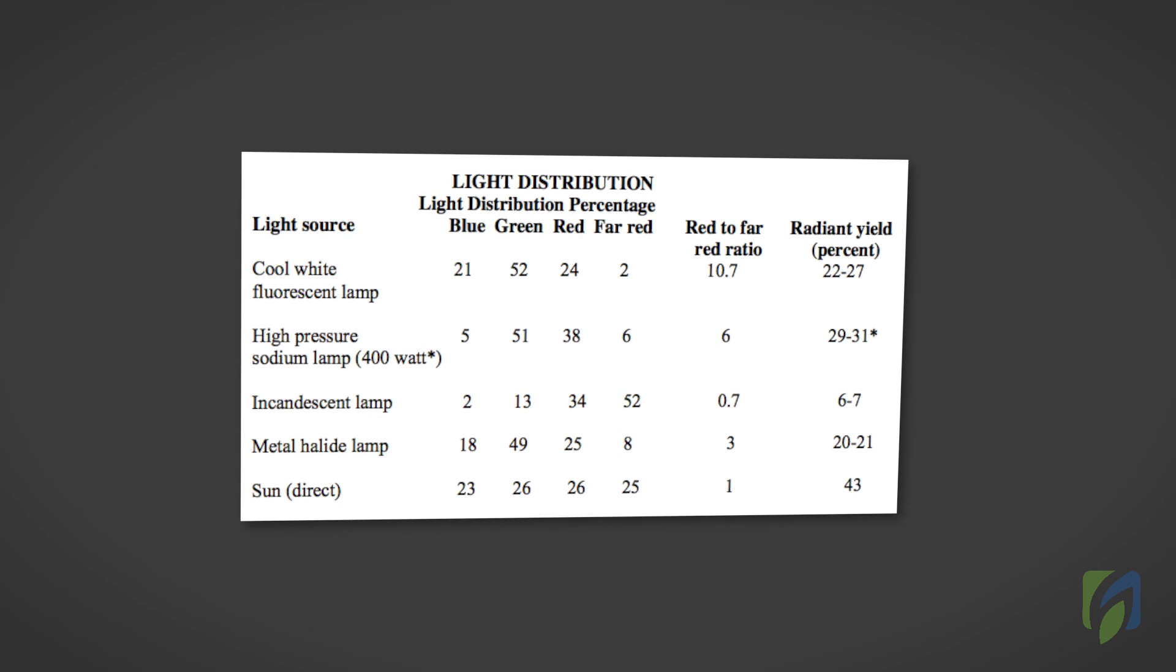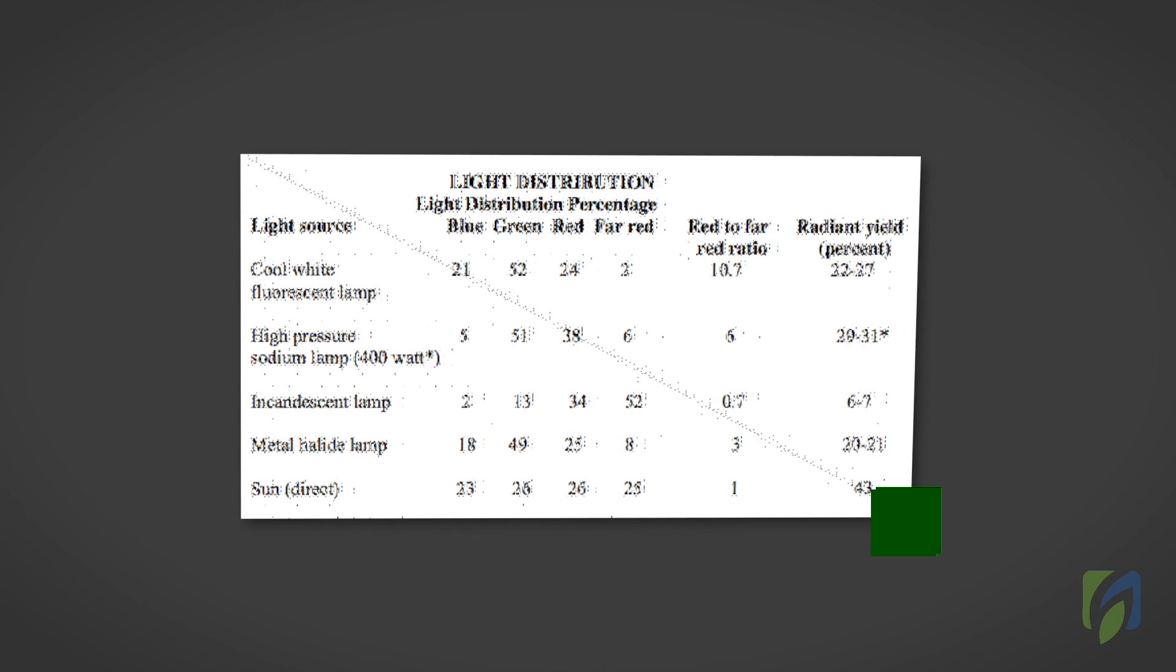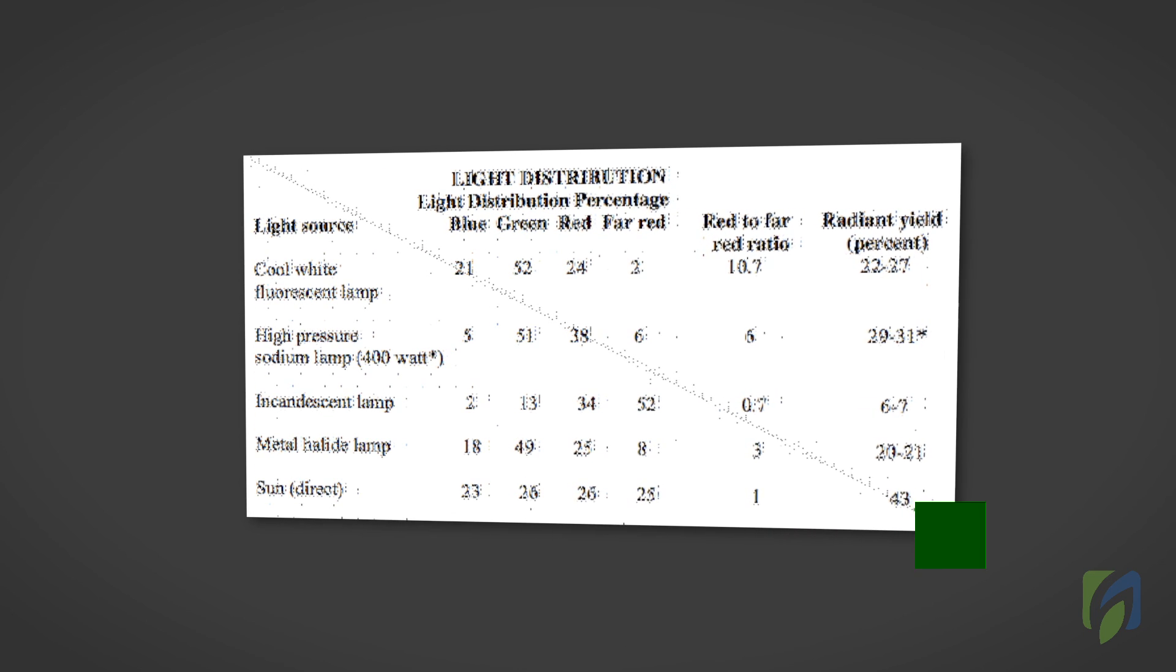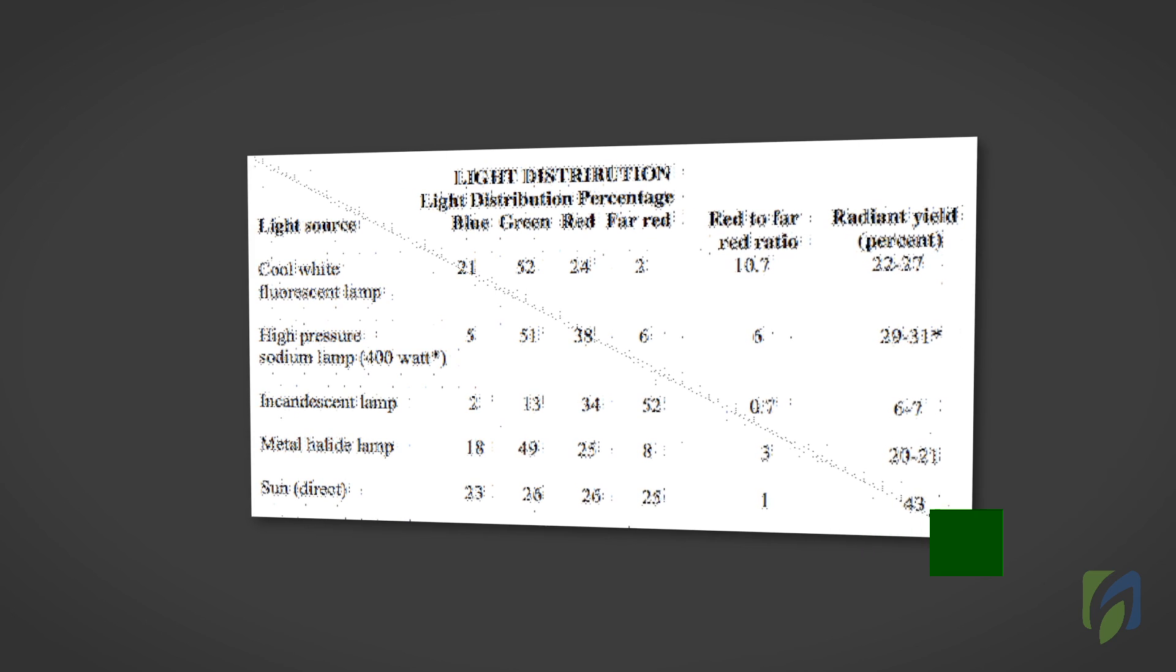The following chart shows not only the differences in light quality based on light sources, but it also clearly indicates how one light source may have drastically different effects on different plants.